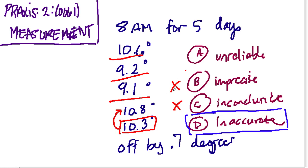I feel like we could definitely argue this one. And unreliable — well, yeah, in a sense it is. But how do they define reliability in terms of data? The argument is that they're reliably inaccurate — they're all 0.7 degrees off, so you can rely on them all being the same amount off. So in a sense, they are reliable. Anyway, I have a tough time with this question, but inaccurate is the clearest representation of the answer to this problem.